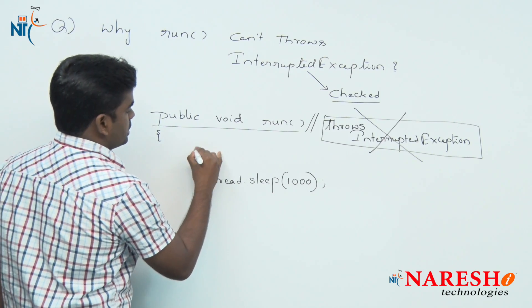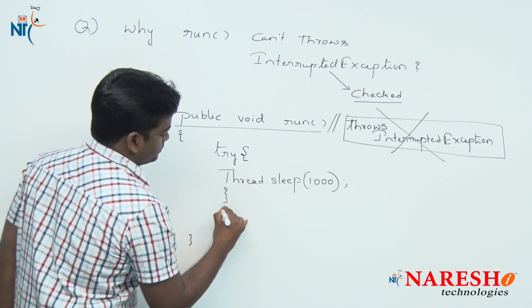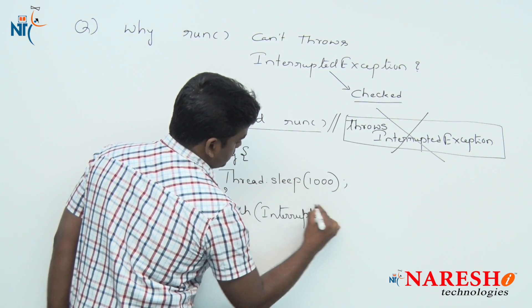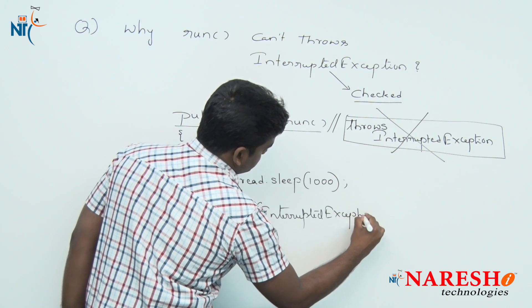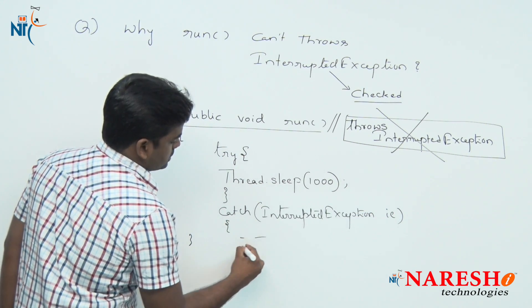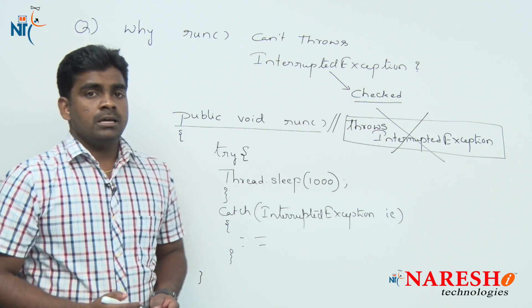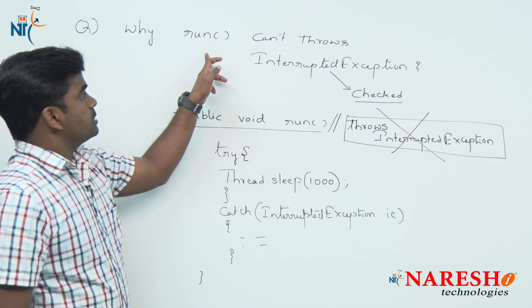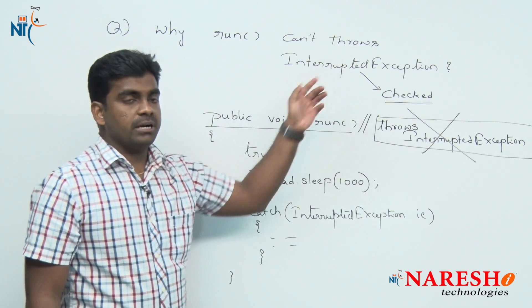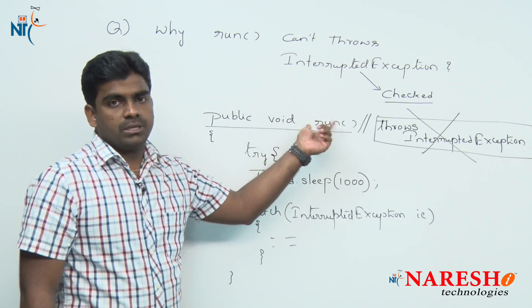So Thread.sleep() must be placed inside a try-catch, and we need to handle the InterruptedException since it is a checked exception — handling is compulsory. Any handling logic we place there. This is the reason why the run method cannot throw InterruptedException while writing thread logic.